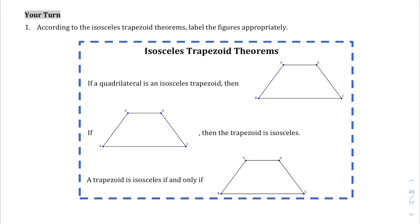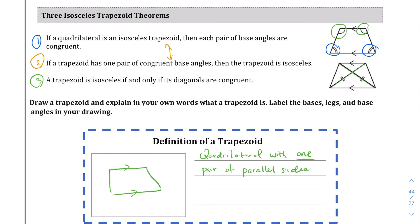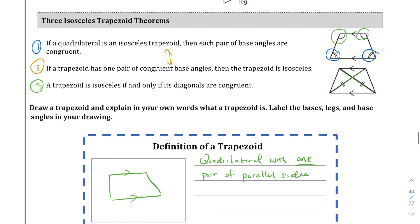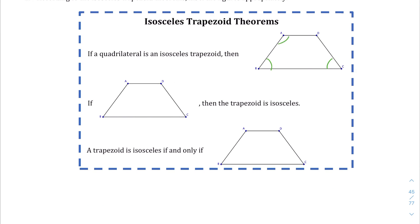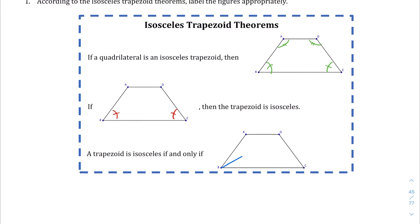Let's talk about the three isosceles trapezoid theorems again. The first one: the base angles are congruent — those base angles are congruent. The second: if you have one pair of base angles that are congruent, then the whole thing is going to be an isosceles trapezoid. And then lastly, the third: the diagonals are going to be congruent — you're going to have congruent diagonals.